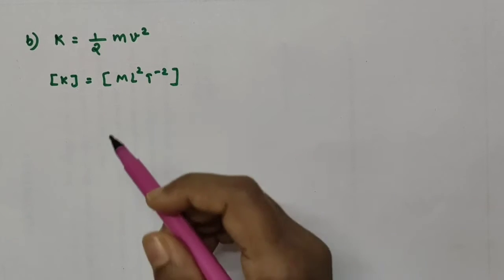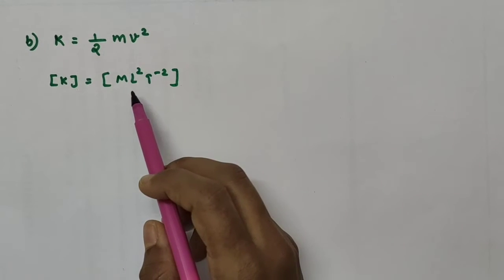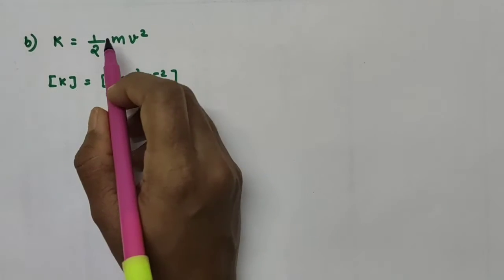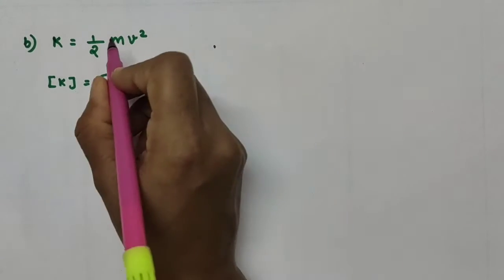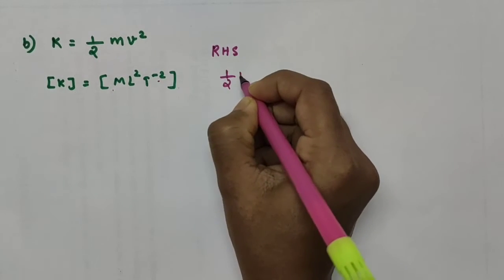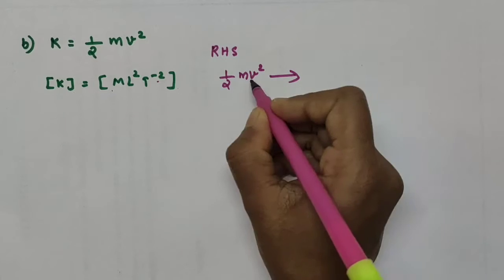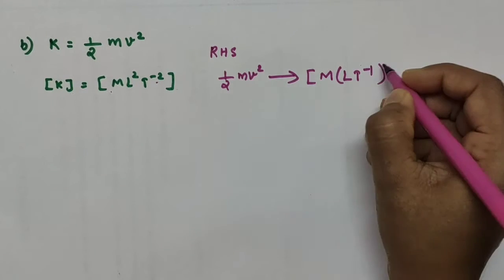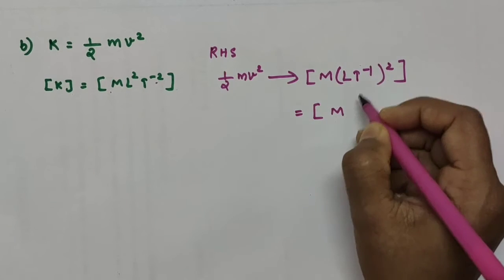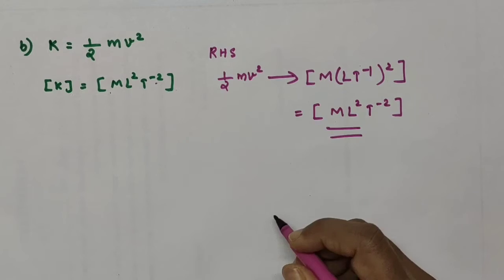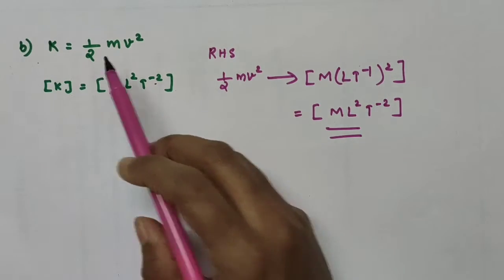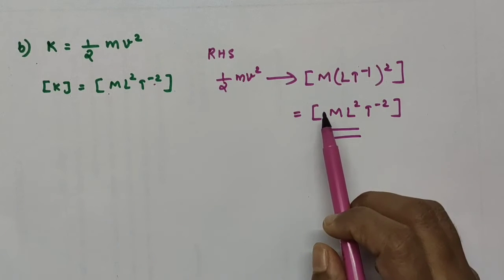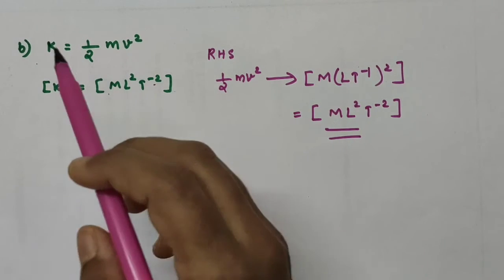Now the second equation is K equal to half MV². The dimensions of kinetic energy on the LHS are ML²T⁻². On the RHS, half has no dimension, mass has dimension M, and velocity squared has dimension L²T⁻², giving ML²T⁻². Comparing LHS and RHS, both have dimensions ML²T⁻². These two are the same, so this equation is dimensionally correct.